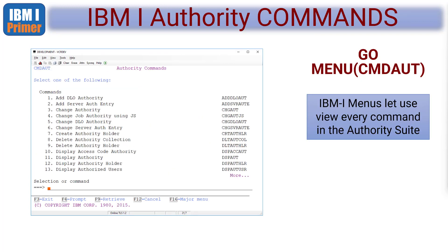If you're signed on to the machine, it all starts with the command authority menu. You can type in GO CMDAUT, and that takes you to the menu you see on screen. From here is every single command you need to work with system authority on the machine.